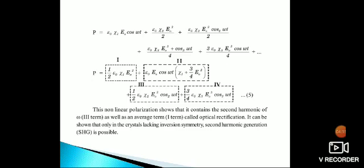We can split it into four important terms. First term: P = (1/2)ε₀ψ₂E₀². Second term: ε₀E₀ cos ωt(ψ₁ + 3ψ₃E₀²/4). Third term: (1/2)ε₀ψ₂E₀² cos 2ωt. This is the final equation, considered as equation 5.